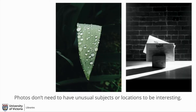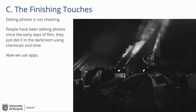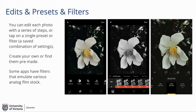You don't need unusual subjects or locations to take an interesting photo. People have been editing photos since the early days of film — they just did it in the darkroom using chemicals and time. When you're using an app, you're using software to do the same thing. Think about what you're trying to express when editing and stay true to that. You can edit each photo step by step or tap a single preset or filter, which is a saved combination of settings. Be cautious though — too much contrast or exposure may blow out the highlights or cause loss of detail in the whites, leaving solid blocks of unnatural color instead of realistic gradients.